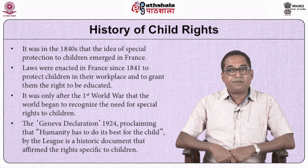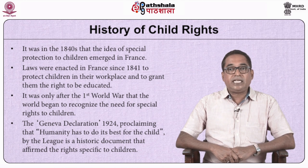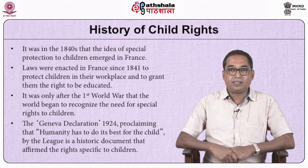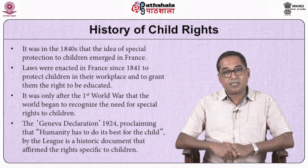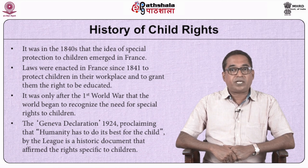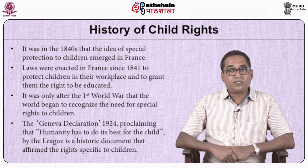On 28 February 1924, the International Save the Children Union ratified the Declaration of the Rights of the Child during the 5th General Assembly. This document was sent to the League of Nations, which adopted the Geneva Declaration on 26 September 1924, proclaiming that humanity has to do its best for the child. The League of Nations later became the United Nations. The document in five chapters discussed the well-being of children and recognized their right to development assistance, relief and protection from adults. The Geneva Declaration recognized and affirmed for the first time the existence of rights specific to children and the responsibility of adults towards children.